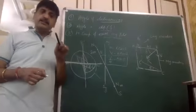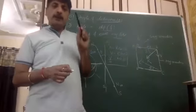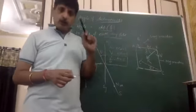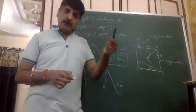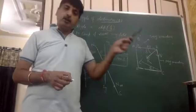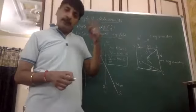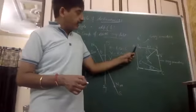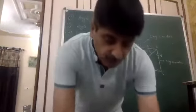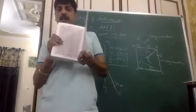Now, if we assume a vertical plane which is rotated through an angle theta with respect to the magnetic meridian, we assume that this vertical plane is different from the magnetic meridian. That vertical plane is rotated through the angle of dip. We assume a vertical plane is rotated through the angle of dip.